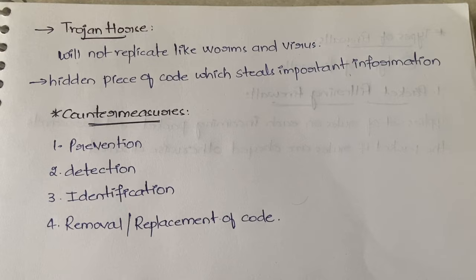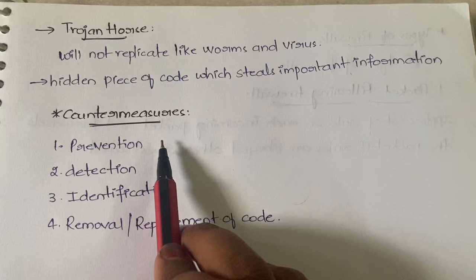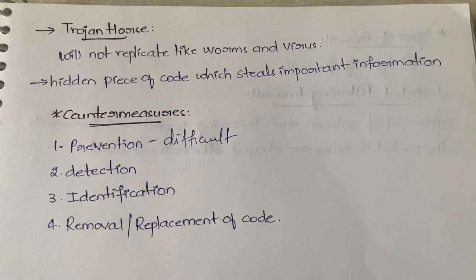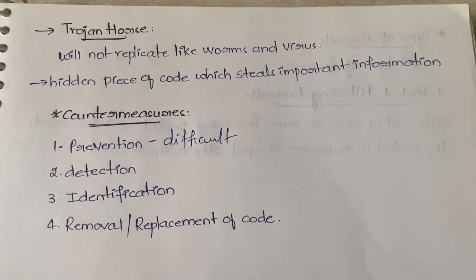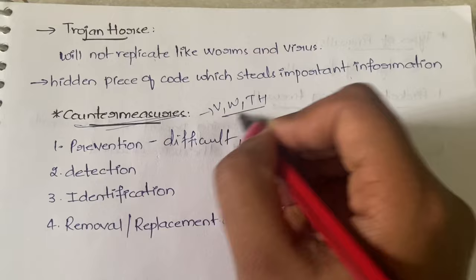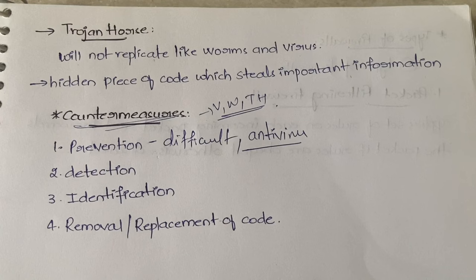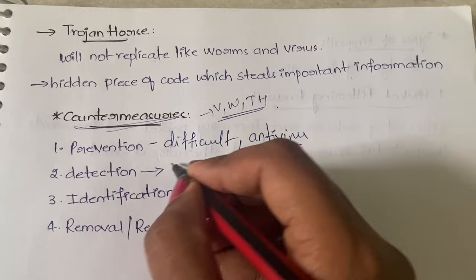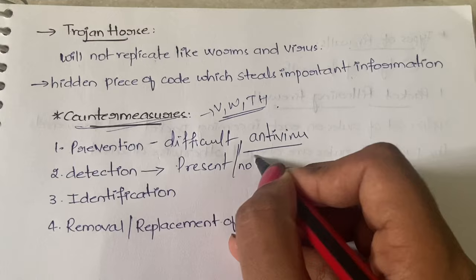Now for countermeasures — these apply to viruses, worms, and Trojan horses. Prevention is always better than cure. You can use antivirus systems to prevent them. However, prevention can be difficult since you can't monitor all incoming traffic constantly. Even with antivirus systems, some viruses may still enter, so detection is also necessary — you need to detect whether a virus or worm is present in your system before you can remove it.